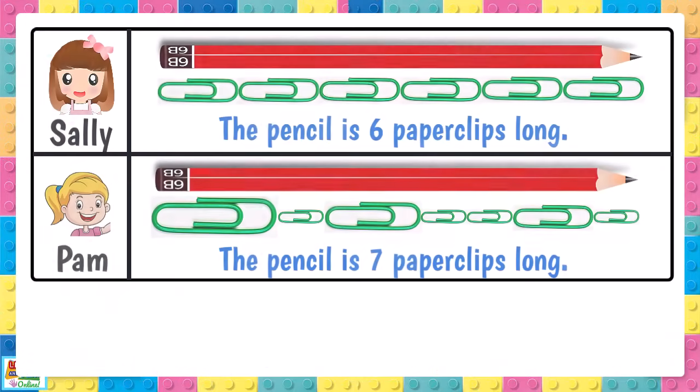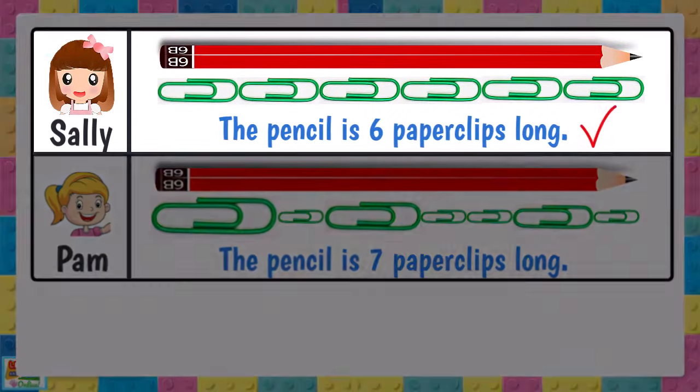Let's go through the rules by measuring this pencil with paperclips as an example. Sally and Pam measured the length of the same pencil, but they got different answers. Sally measured the pencil correctly. The pencil is 6 paperclips long.